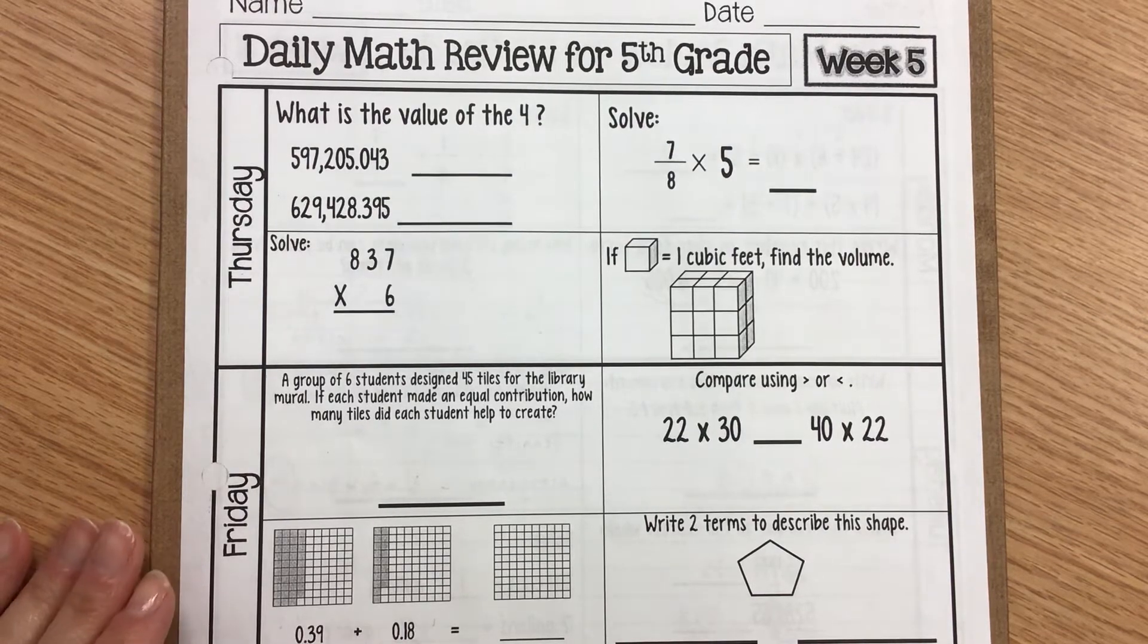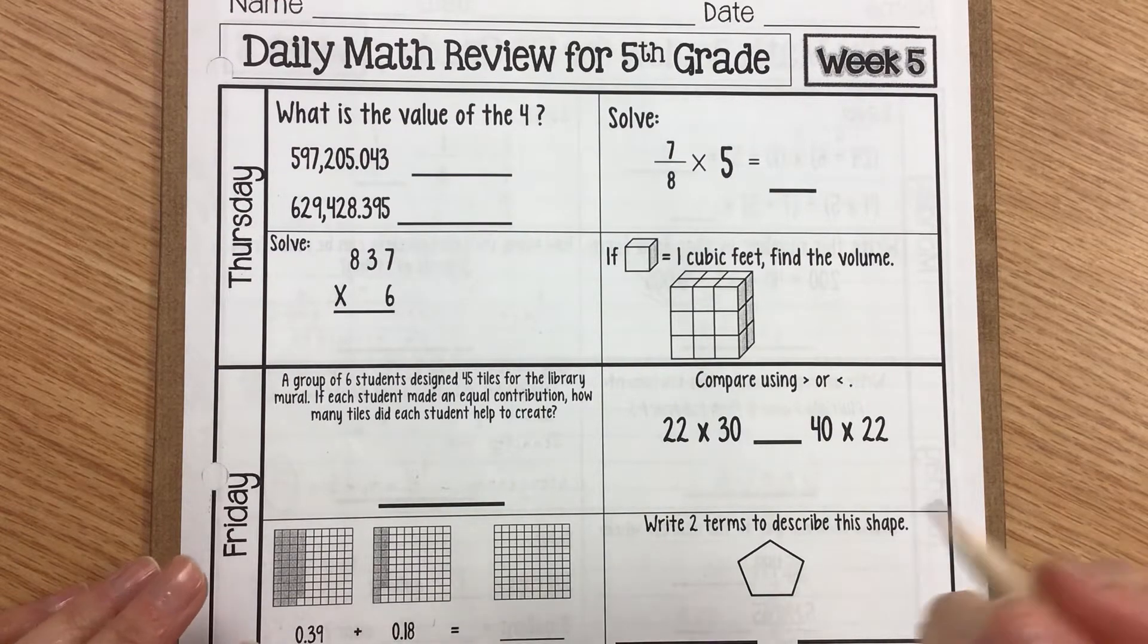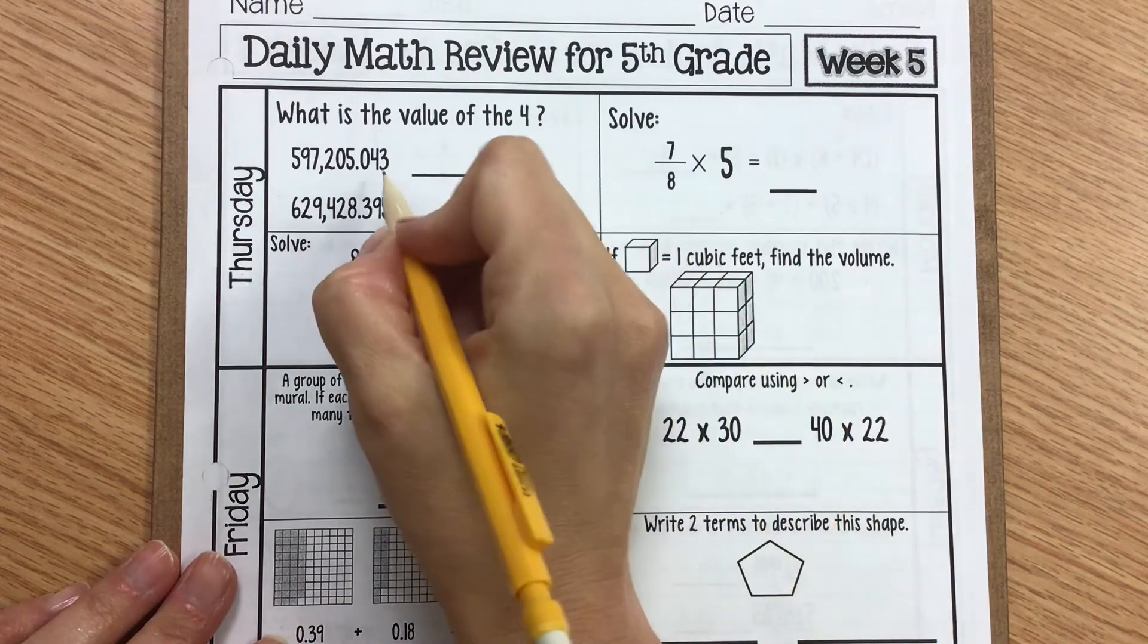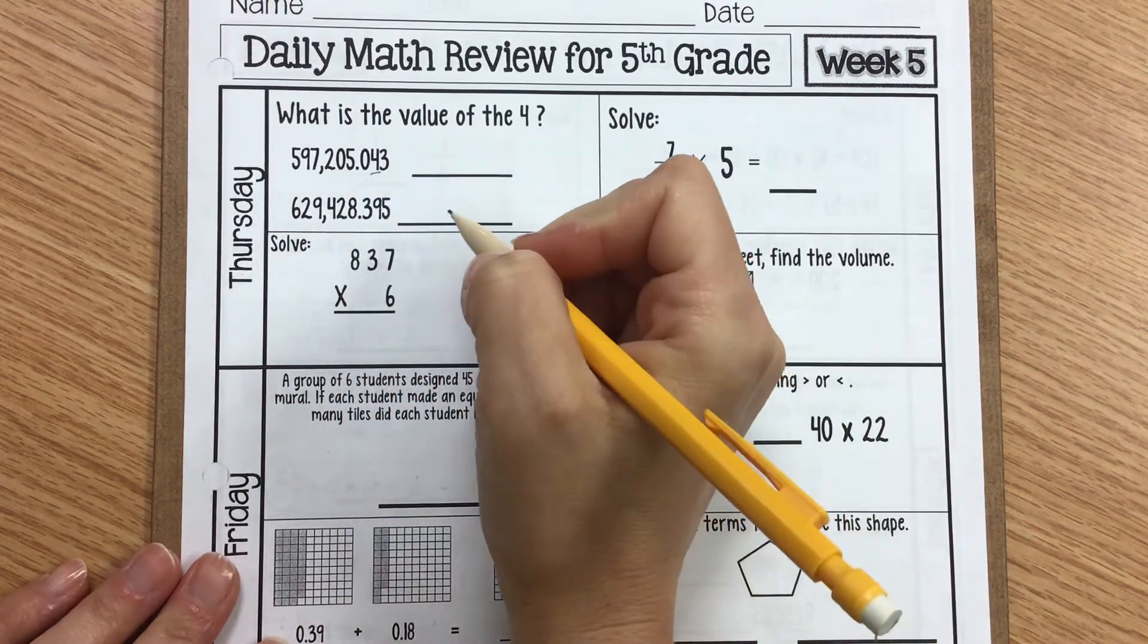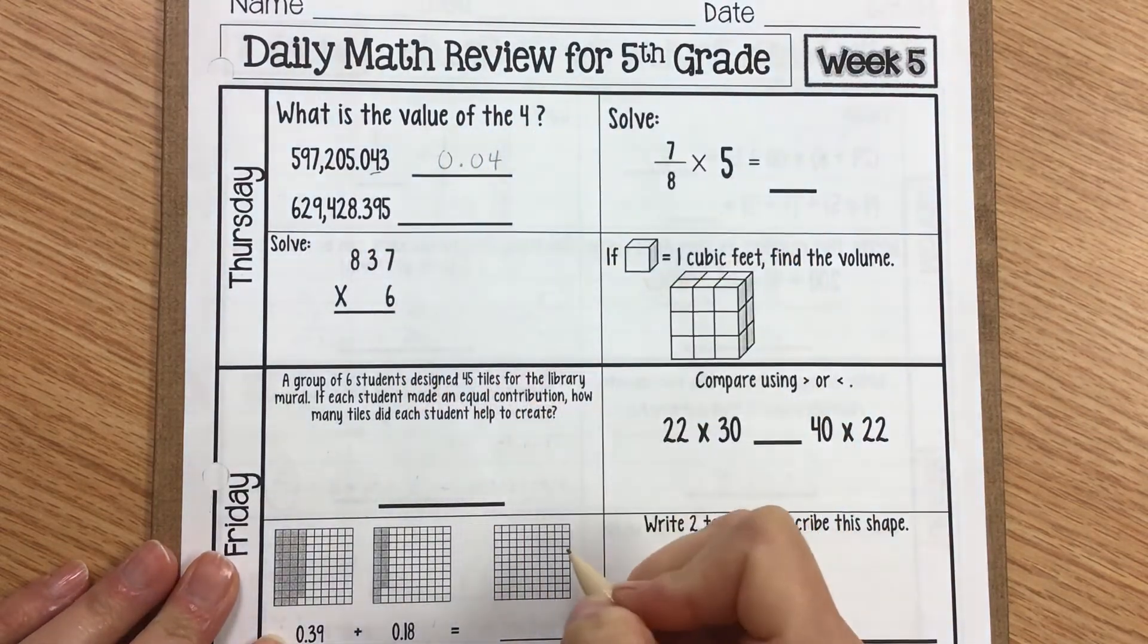Alright, ladies and gentlemen, we're going to go ahead and get started with Thursday. So we have, what is the value of 4? Remember, we're not talking about what's the place value of 4, we're talking about what is the value of 4. So we have 4 in the hundredths place value. So the value of 4 is 4 hundredths.